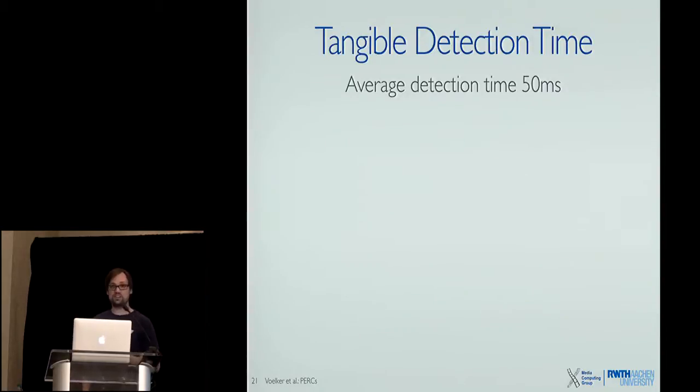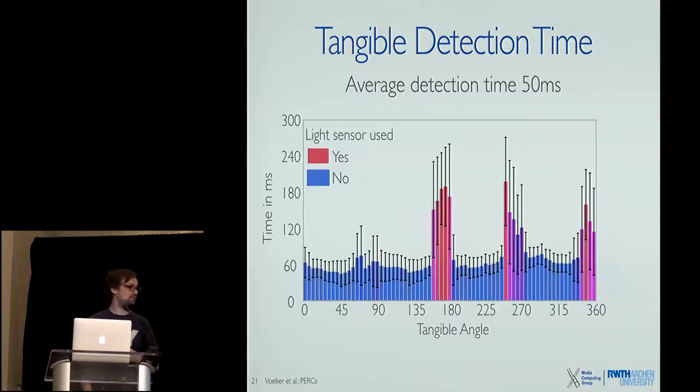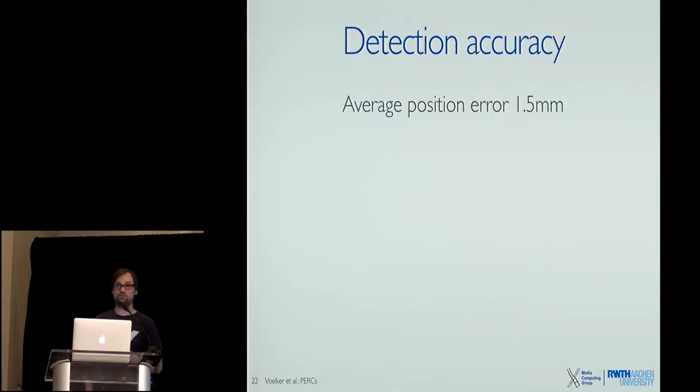So about average detection time, it's about 50 milliseconds from the time the tangible was placed until it was fully detected, so that's quite fast. However, if we look at the different angles we see at the moment we are using the light sensor, detection time goes up to 160 milliseconds, which is kind of long. But as soon as you start moving your tangible again, all three touch points are detected and detection time goes down. This is just for placing it, not touching it again and everything.